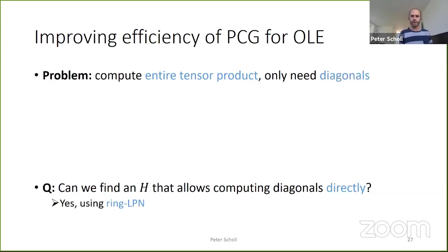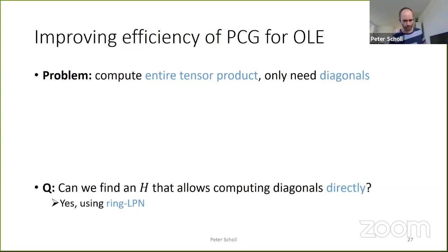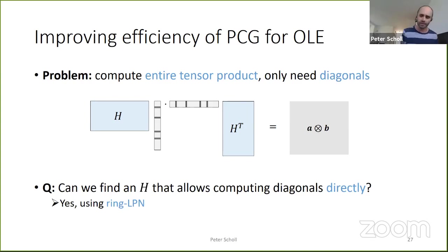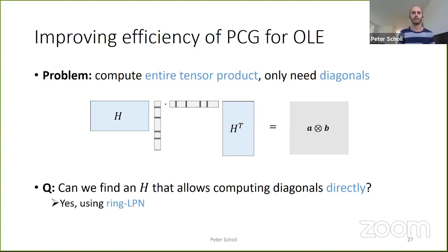To improve efficiency for OLE, the problem is that we compute the entire tensor product when we only want diagonal entries. The natural approach: find a specially structured matrix H where the LPN problem remains hard but allows computing the desired equation without going through all tensor products — ideally with linear or quasi-linear computation. This leads to the ring learning parity with noise assumption.